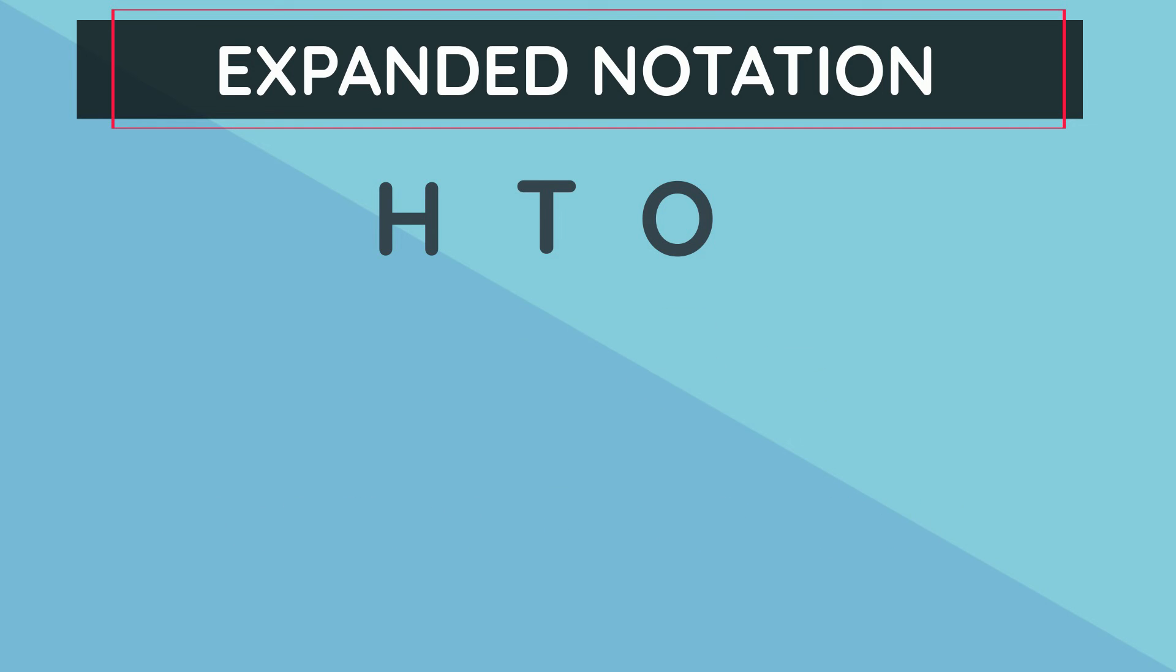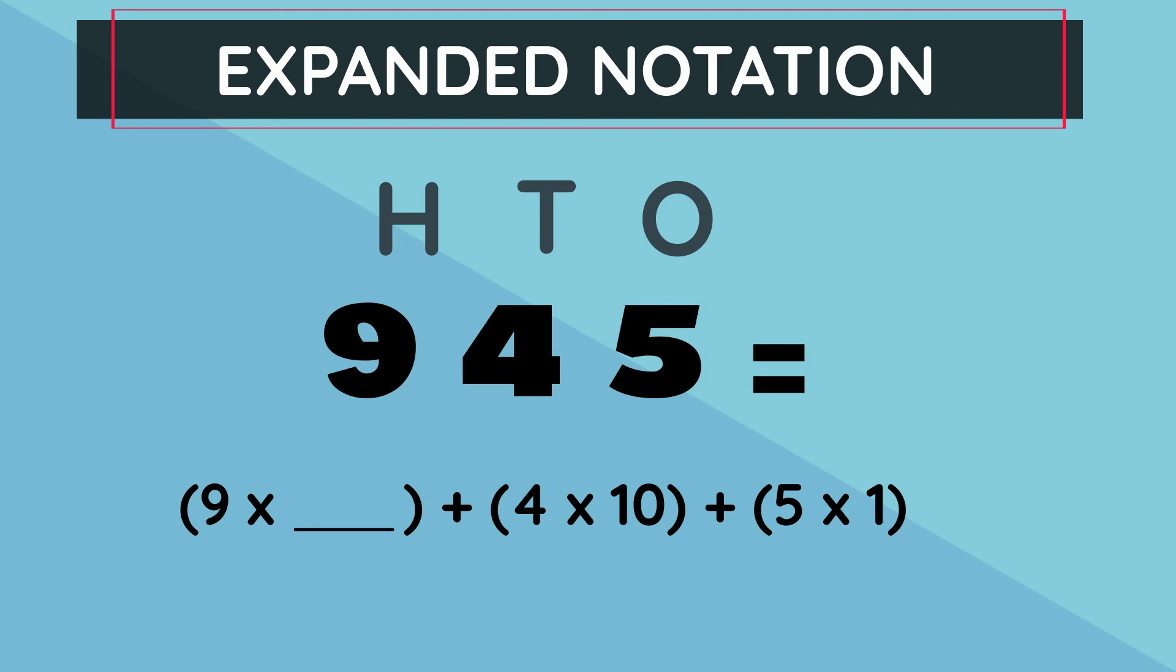And our last example, the number is 945 and we're missing a number from the expanded notation. What place value position is the 9 in? That's right, the 100. Therefore, we multiply by 100 in our expanded notation for the 9. So our missing answer is 100.